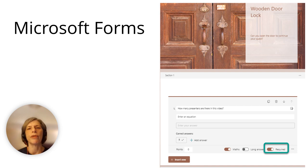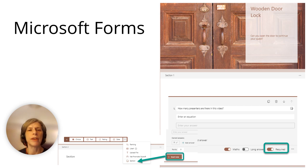Microsoft Forms and Google Forms are a simple way to make an escape room. Set up your question, then switch the required button on so that the students need to get the correct answer before they move on. Making each question a new section means that the next question is only displayed after the correct answer has been given to the previous question. Text, images and videos can be integrated into the form, both as ways to make the task more varied and to add the escape room narrative and atmosphere.